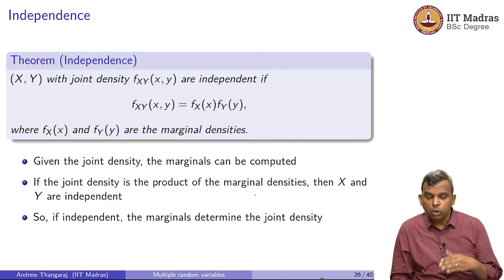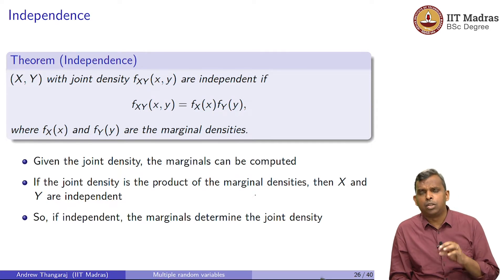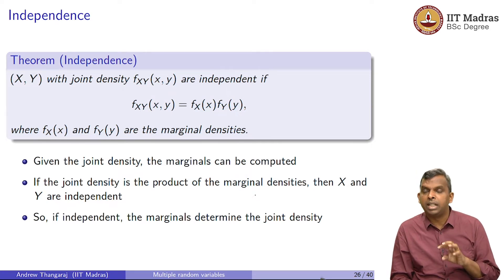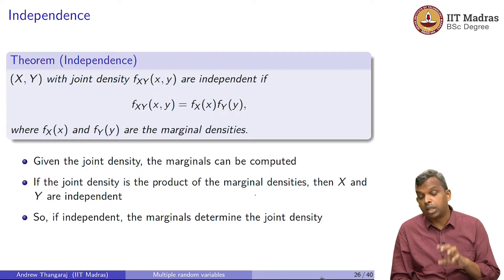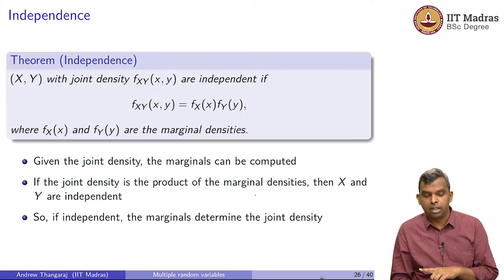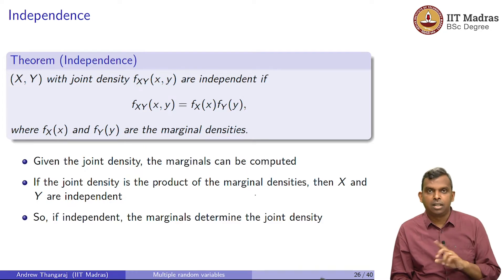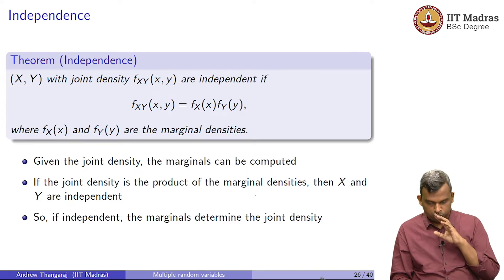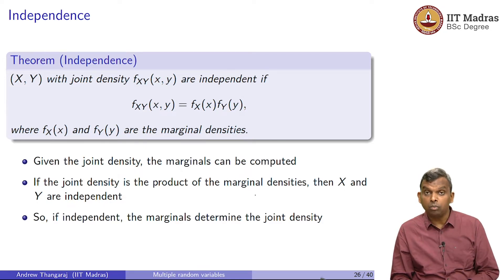To determine independence, you need the joint density. If the joint density is given, you can compute the marginals from it. Once you compute the marginals, you check if the joint equals the product of the marginals. If that is true, then X and Y are independent.